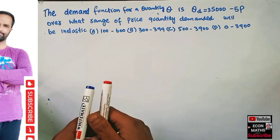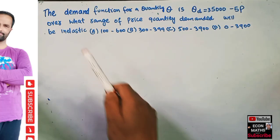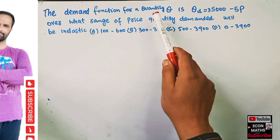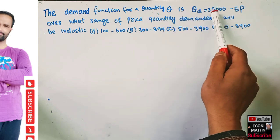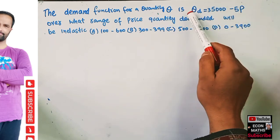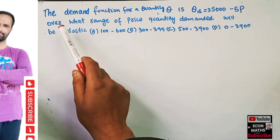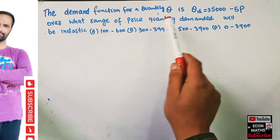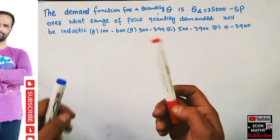Let us solve another question on price elasticity of demand. The demand function is: quantity demanded Q equals 35,000 minus 5P, where Q is the quantity demanded and P is the price. We have to find out what range of price quantity demanded will be inelastic.